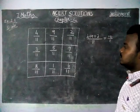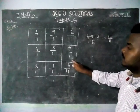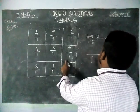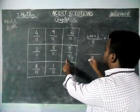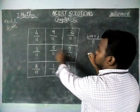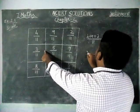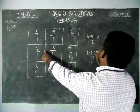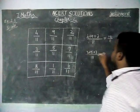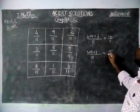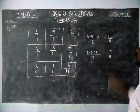Next we are going to check the second row. Since the common denominator is 11, 3 plus 5 plus 7 is equal to 15 by 11.